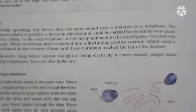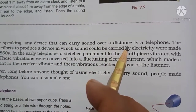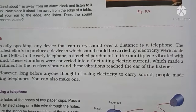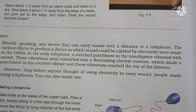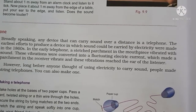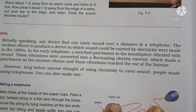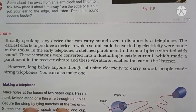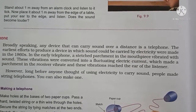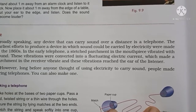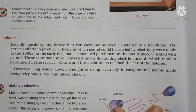Any device that can carry sound over a distance is a telephone. The earliest efforts to produce a telephone were made in the 1860s. In the early telephone, a parchment in the mouthpiece vibrated with the sound, and these vibrations were converted into a fluctuating electric current, which made the parchment in the receiver vibrate, and these vibrations reached the ear of the listener.